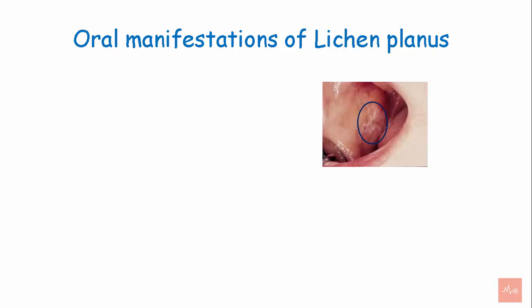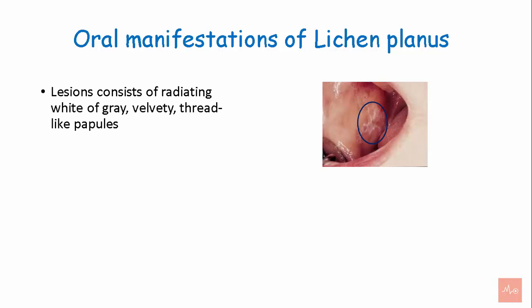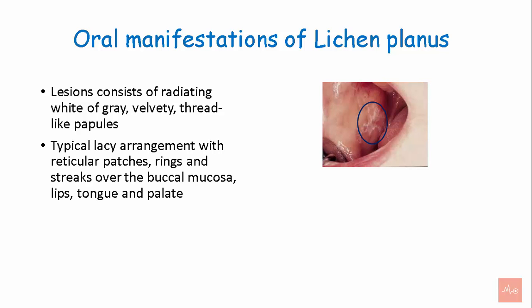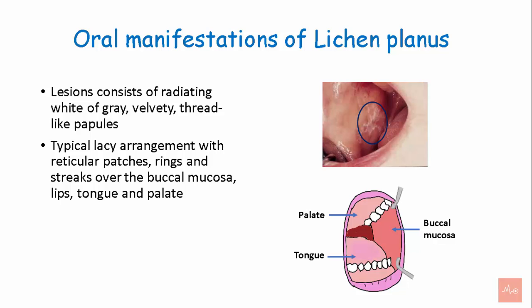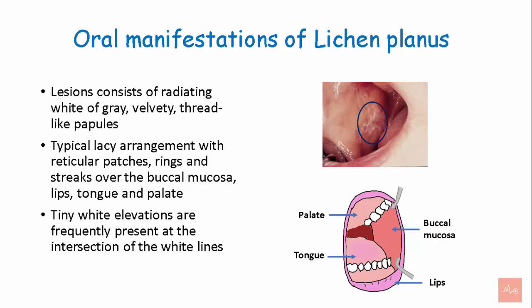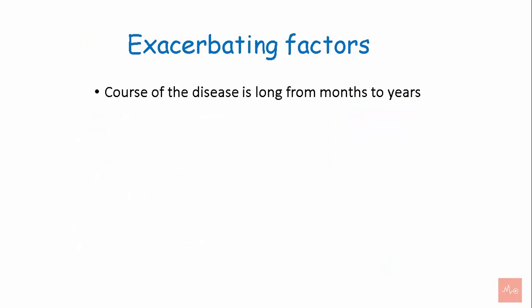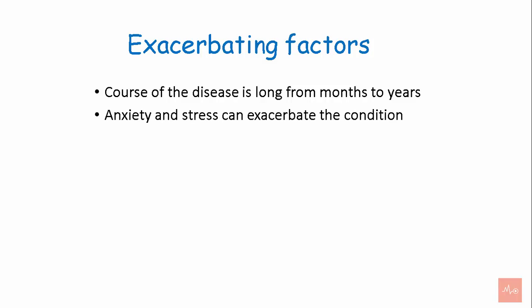Oral manifestations of lichen planus: Lesions consist of radiating white or grey lines, velvety and thread-like papules. A typical lacy arrangement with reticular patches, rings, and streaks are seen over the palate, tongue, buccal mucosa, and lips. Tiny white elevations are frequently present at the intersection of the white lines. The course of the disease is long, ranging from months to years. Anxiety and stress can exacerbate the condition.